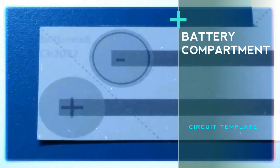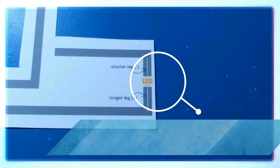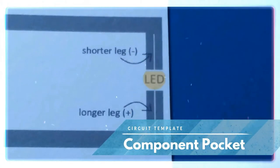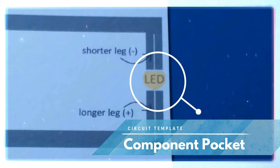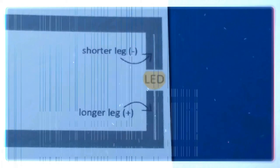The second most important section of the circuit template is the component pocket. We will place components here like a LED, a DC motor, or siren module as per the project we design on this circuit template.